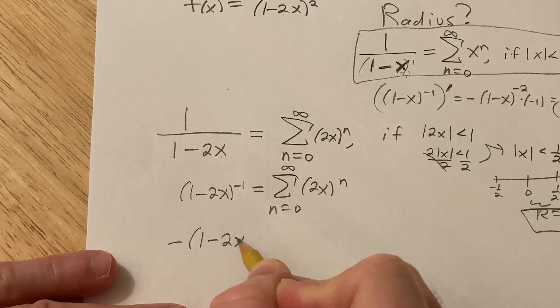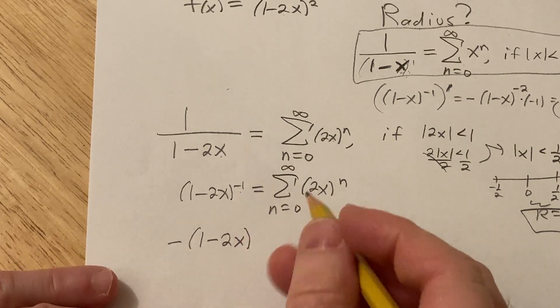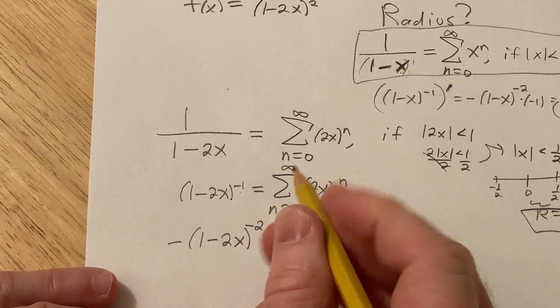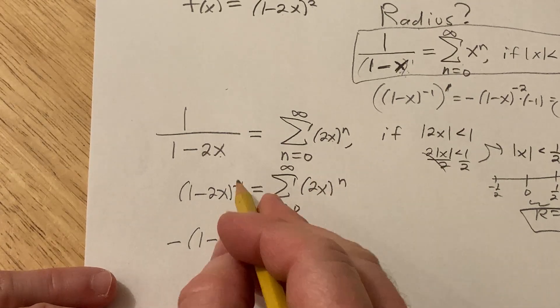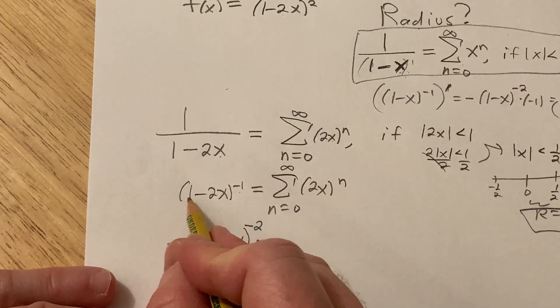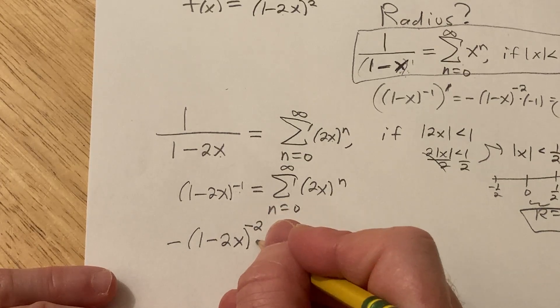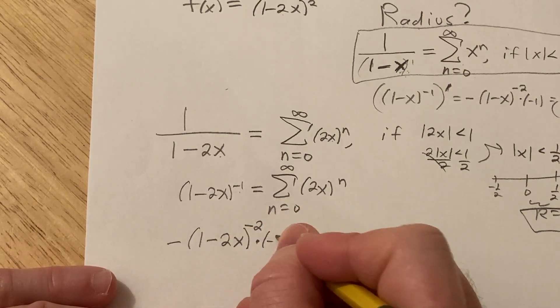1 minus 2x. Subtract 1 from the exponent, so you get minus 2. And then you multiply by the derivative of the inside, right? We're using the chain rule. So take the derivative of the outside, leave the inside untouched, and then times the derivative of the inside, which is going to be negative 2.